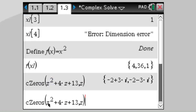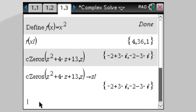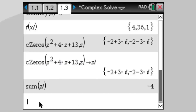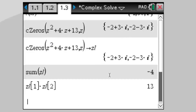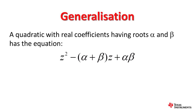We can store those two elements to zl, and then typing sum(zl) gives the sum of the two roots, which is minus 4. The product of zl1 times zl2 — the product of the roots — gives 13. For the quadratic z squared plus 4z plus 13, this is no fluke. For any quadratic with real coefficients having roots alpha and beta, the equation is always z squared minus (sum of roots) times z plus (product of roots) equals zero.